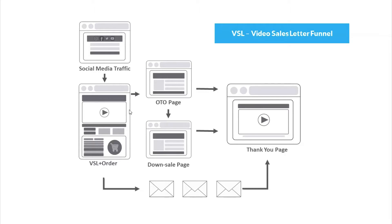Let's start by taking a look at the VSL funnel blueprint. This funnel is designed to use a video on the landing page to make the sale of your product. At the bottom of the page we have the order form for them to make the purchase. From here they'll be taken to a OTO page — the one-time offer page — where they get an opportunity to purchase another product. If they decide not to, they'll be taken to the downsell page, which is designed to offer that one-time offer maybe at a discount or a payment plan, or a different product altogether. From there they'll be sent to the checkout and then conclude at the thank you page.